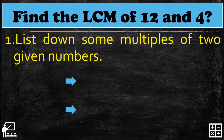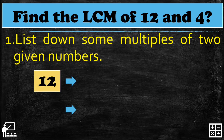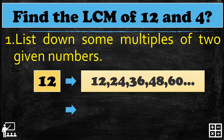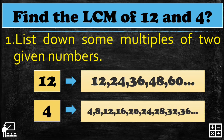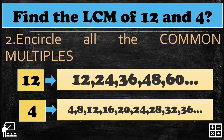Let's try: find the LCM of 12 and 4. First, list down some multiples of the two given numbers. Starting with 12: the multiples are 12, 24, 36, and so on. For 4: adding by 4 gives 4, 8, 12, and so on and so forth. Here are the multiples of 4.